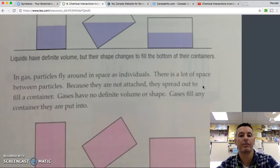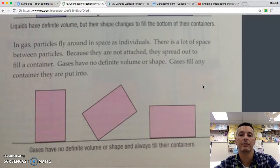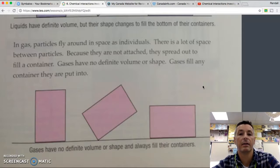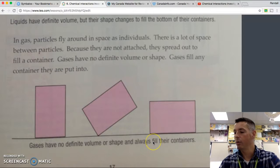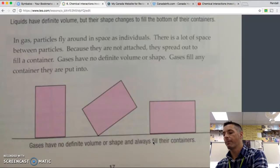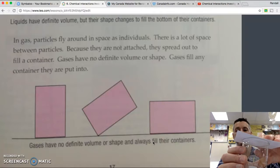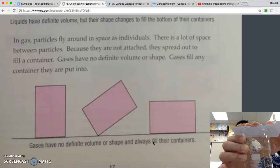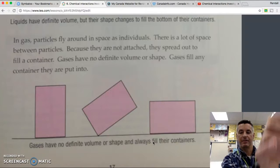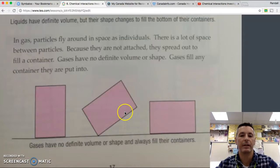In gas, particles fly around as individuals. There is a lot of space between particles. Because they are not attached, they spread out to fill any container. Gases have no definite shape or volume. Gases fill any container they are put into. So if I trap some gas in this beaker, they have no definite volume and they have no definite shape. All right, moving along.